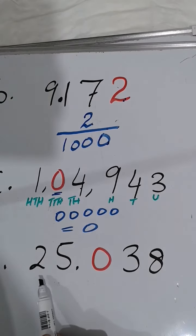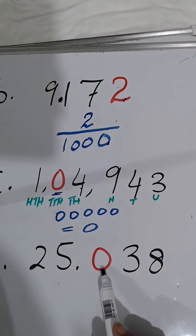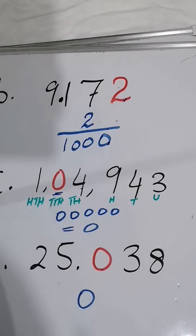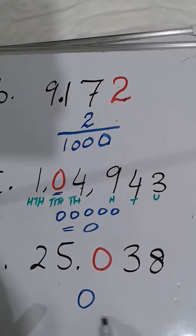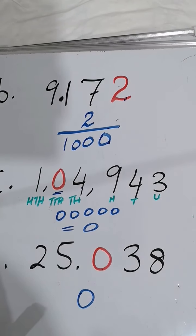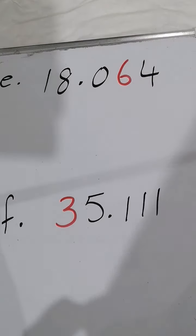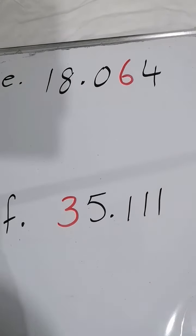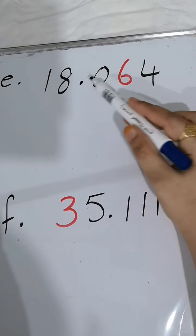The next one is 25.038. As I told you, zero - you can write directly zero. Whenever they ask you the value of zero, doesn't matter what you write in the denominator, or just leave it as zero.